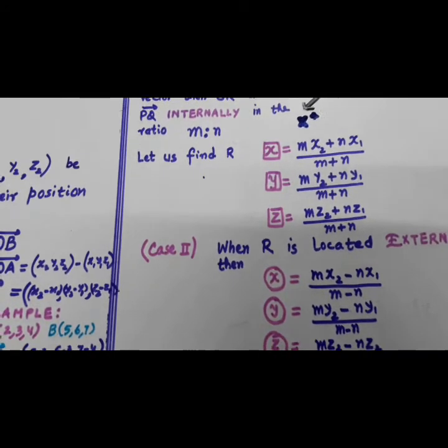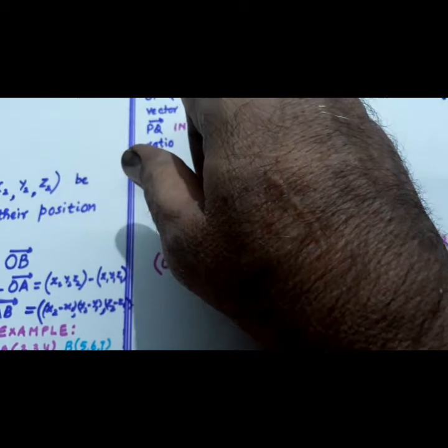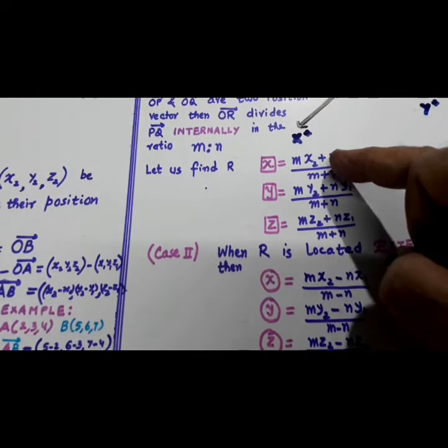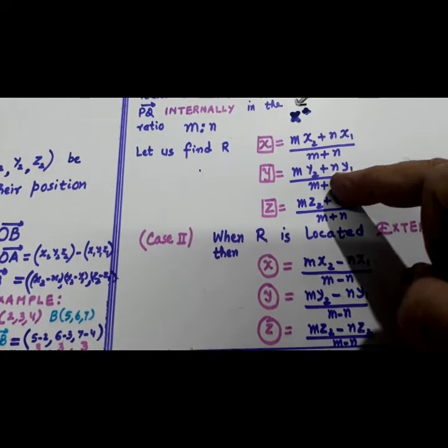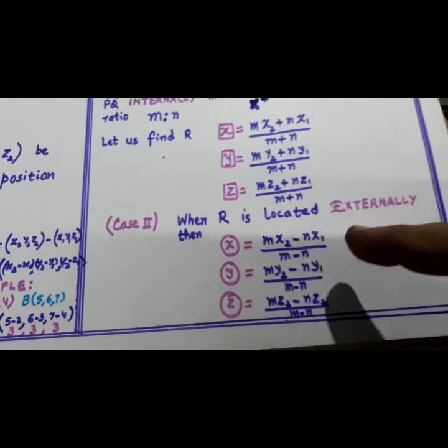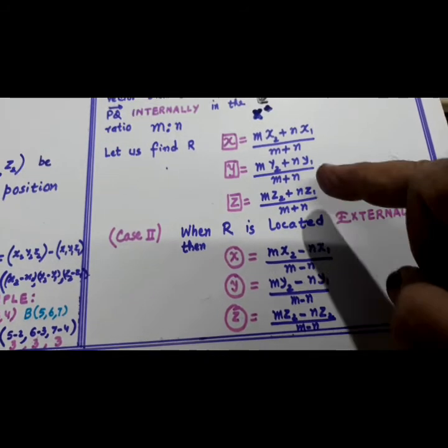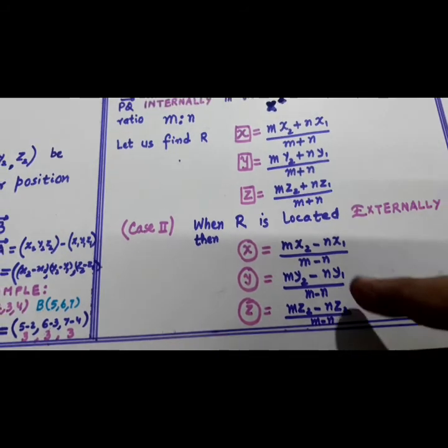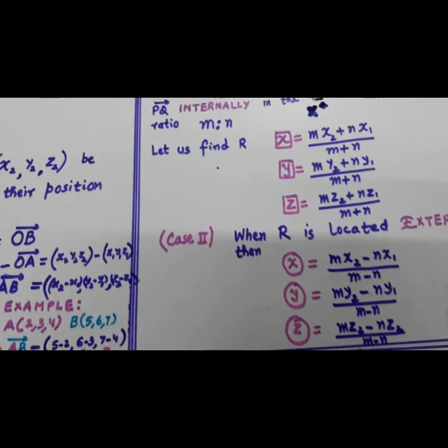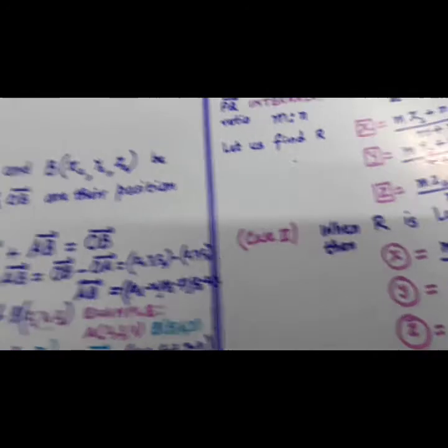Second case is when this point R is externally dividing. Wherever there were plus signs, put minus signs. See, one plus is up, one is down. Put minus. Plus plus is there, put minus minus. Plus plus is there, minus minus. So these are two concepts.